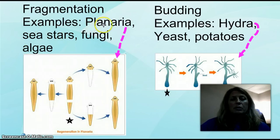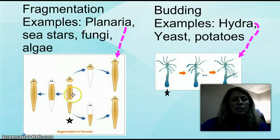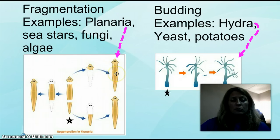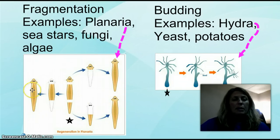An example for fragmentation would be planaria. Planaria is a flatworm, and I could take this one parent flatworm and break it into three pieces. The head could become a full mature flatworm, the tail could become a flatworm, and even the midsection could become a flatworm. Other examples would be sea stars, fungi, and algae.